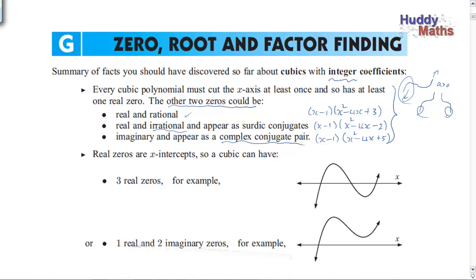Complex conjugates hide within these real coefficients because the sum and product of their values is real. So we have three real zeros, or one real and two imaginary zeros. These could be one whole number and two irrational, and so on. Just remembering - in this course we're only doing real polynomials, that is, every term has to have a real coefficient.